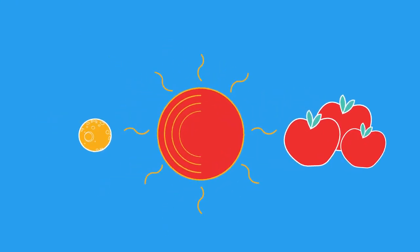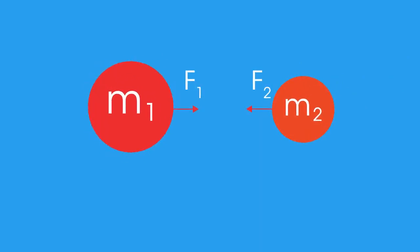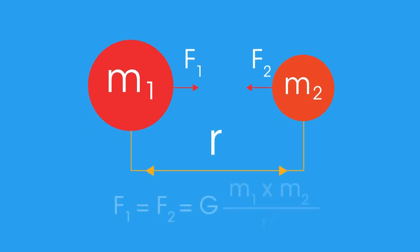The force increases as either or both of the masses m1 and m2 increase and drops off by the square of the distance r between them.